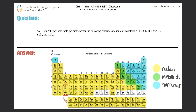Number 95. Using the periodic table, predict whether the following chlorides are ionic or covalent: KCl, NCl3, ICl, MgCl2, PCl5, and CCl4.